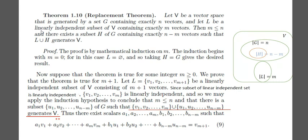Now suppose the theorem is true for some integer m greater than or equal to 0. We will prove it for m plus 1. Let L equal {V1, V2, ..., Vm+1}, a linearly independent subset of V containing m plus 1 vectors. Since a subset of a linearly independent set is linearly independent, the set {V1, V2, ..., Vm} is linearly independent.